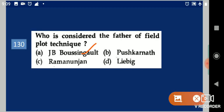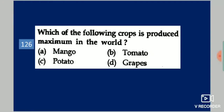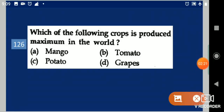Next question: Which of the following crops is produced maximum in the world? Your options are: mango, tomato, potato, grapes. Your answer is potato.